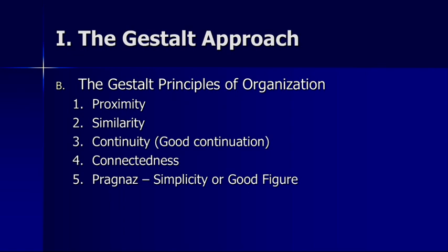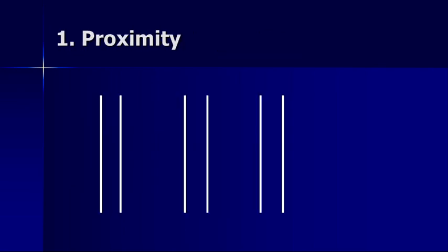There are five different Gestalt principles of organization: proximity, similarity, continuity, connectedness, and pragnanz, which is simplicity or good figure. Starting with proximity — we perceive things as being connected because they are close to one another. So while technically there are six lines here, we could see three groups or three objects because of the way these things are grouped together, simply due to proximity.